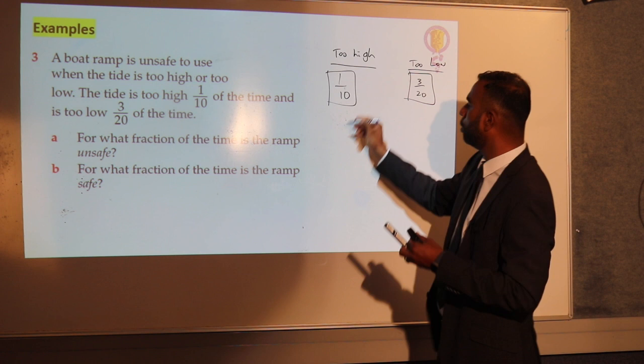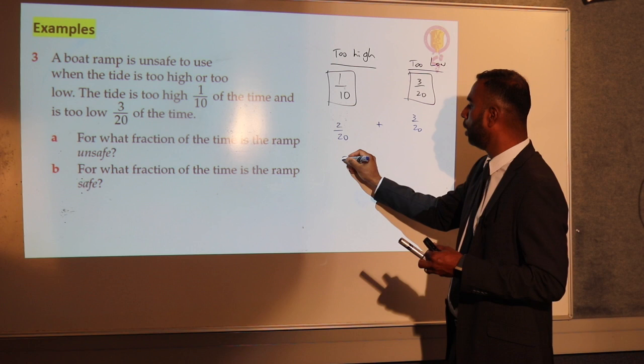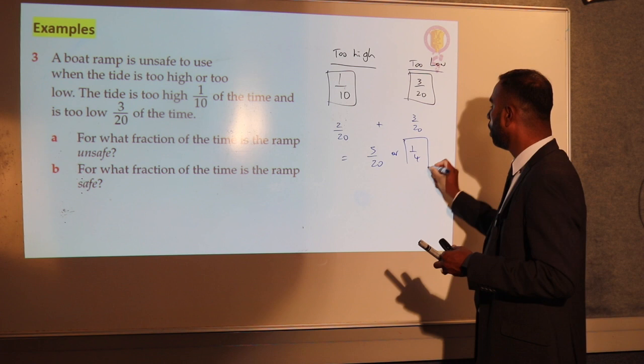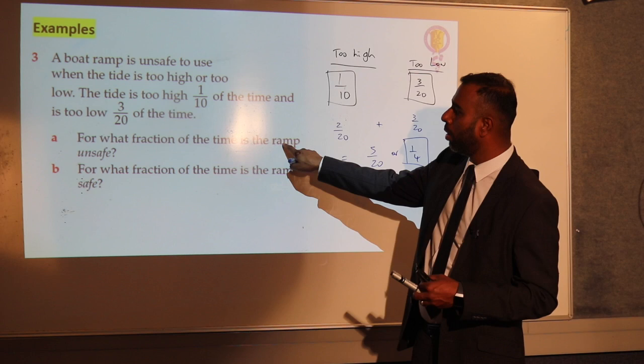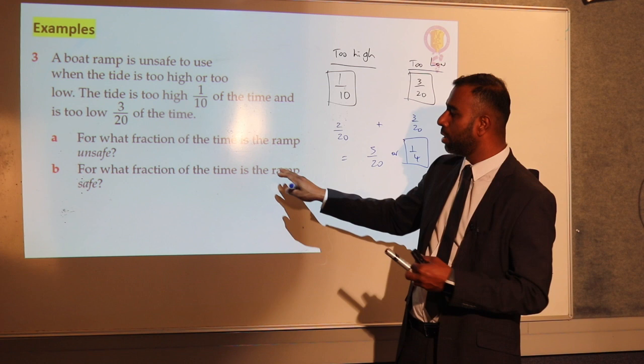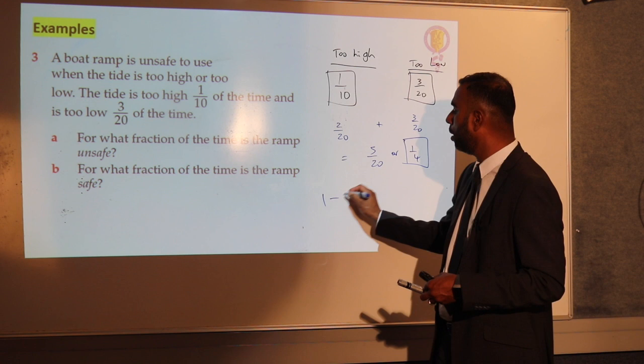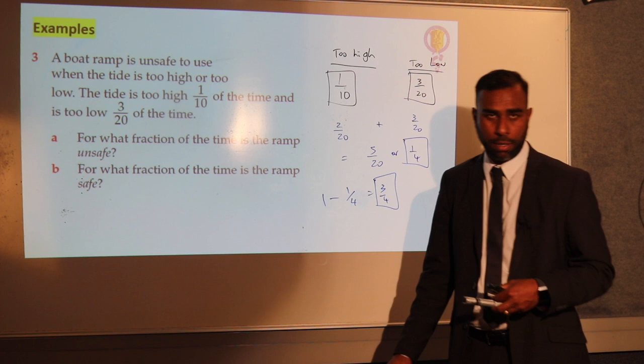Looking at the common denominator — 1 tenth becomes 2 over 20, and 3 twentieths stays as 3 over 20. Adding them gives 5 over 20, which simplifies to 1 quarter. In maths we always try to simplify to the lowest fraction, so the ramp is unsafe 1 quarter of the time. The next part asks: what fraction of the time is the ramp safe? If it's unsafe 1 quarter of the time, then 1 minus 1 quarter equals 3 quarters — that's when it is safe.